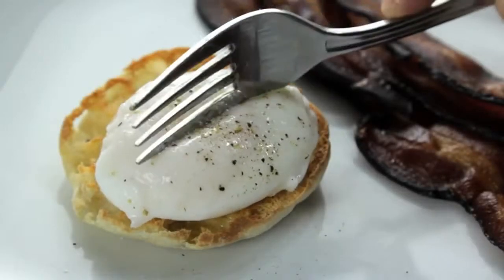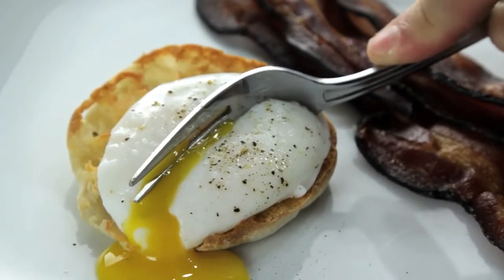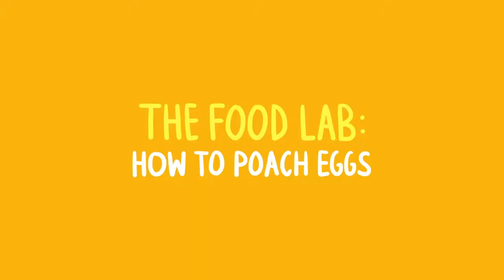The perfect poached egg. Tender whites around a warm liquid yolk that oozes out like gold when you cut into it. They're an essential part of Eggs Benedict. They can turn any salad into a meal or any vegetable into brunch.